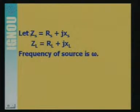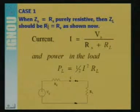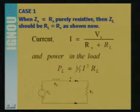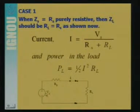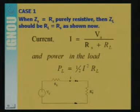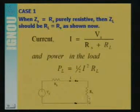The source impedance Zs equals Rs plus jXs, and the load ZL equals RL plus jXL, where omega is the frequency of the source. Whenever we apply the maximum power transfer theorem, we consider the whole complicated network as a Thevenin or Norton equivalent — a single voltage source with internal impedance. We want to find the value of RL for which the power transferred to RL is maximum.